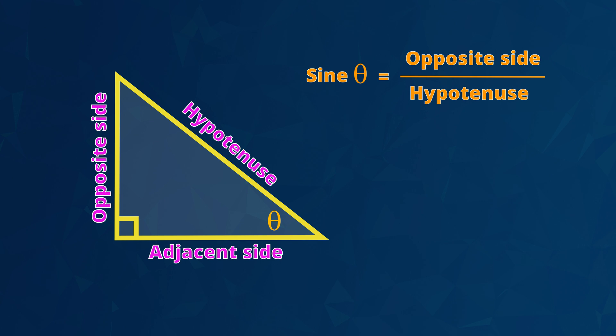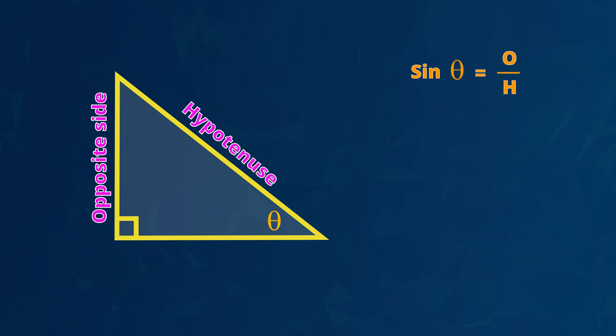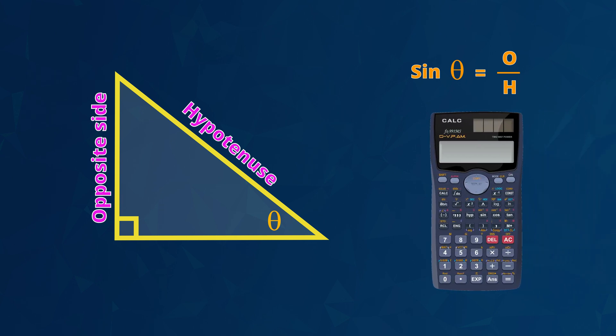The rule is that the sine of an angle marked theta equals the length of the opposite side divided by the length of the hypotenuse. We usually shorten that to: sine theta equals O divided by H. We also use a scientific calculator — there is a sine button on the calculator that accesses all of the calculations for theta angles comparing the opposite side divided by the hypotenuse in right angle triangles.